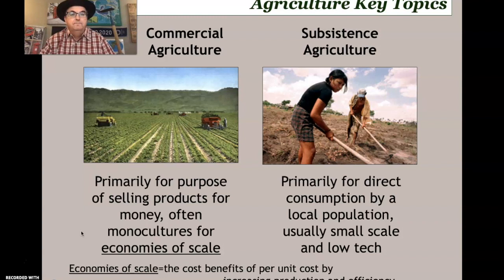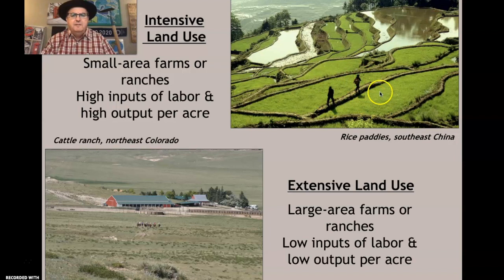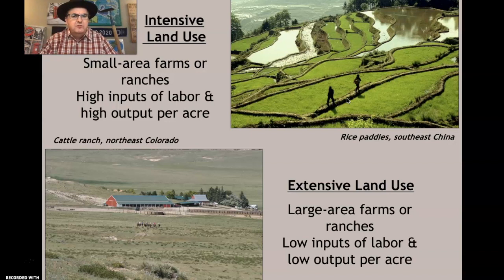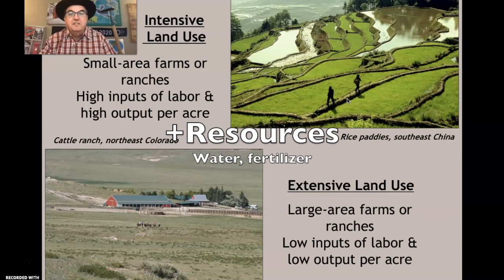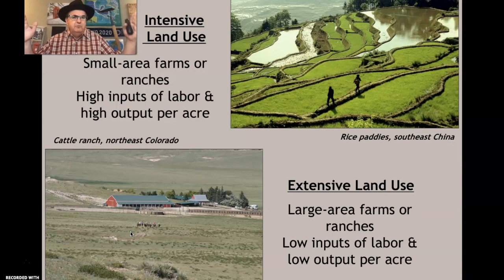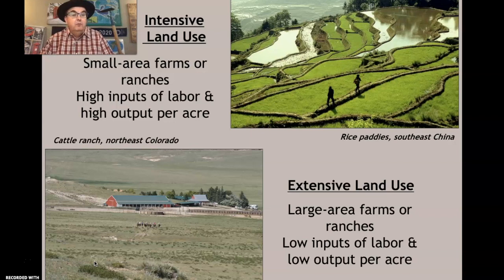You can have intensive or extensive land use, and this intensive idea has a double meaning. Looking at the rice paddies in China, this land is intensely being used — every square inch is being used with a high input of labor. On the other end, extensive land use is like cattle farming in Colorado where you let cattle out and they graze around. You're not putting a lot of inputs into the land, but you still get outputs from the cattle, without using every square inch of that land.